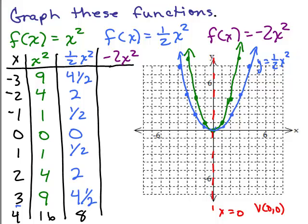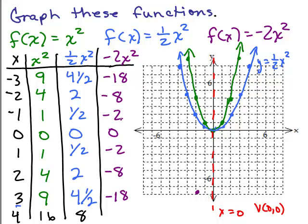Now for negative 2x squared, I multiply x squared by negative 2: 9 times negative 2 is negative 18, 4 times negative 2 is negative 8, 1 times negative 2 is negative 2, and negative 2 times 0 is 0. Negative 3 giving negative 18 won't fit on the graph, but for negative 2 and negative 8 I go negative 2 and down 8. For negative 1 and negative 2, and then (0, 0) with corresponding points on the other side.